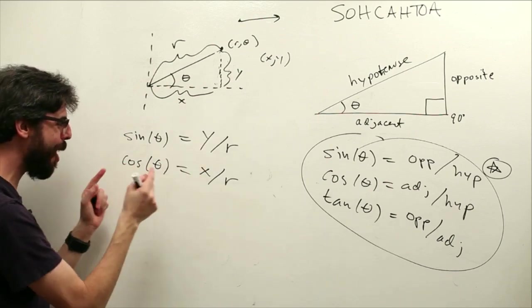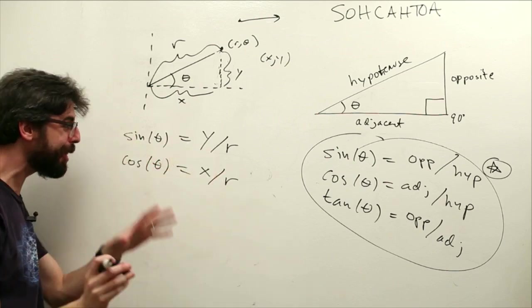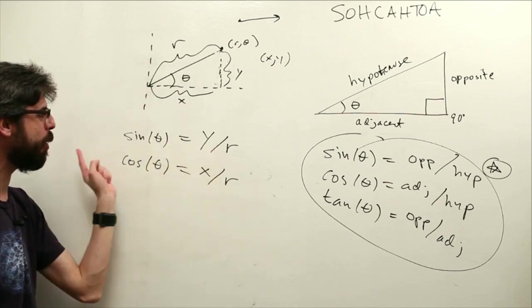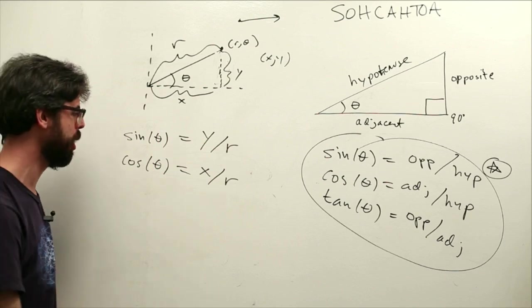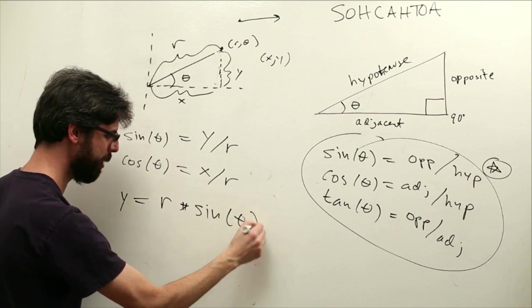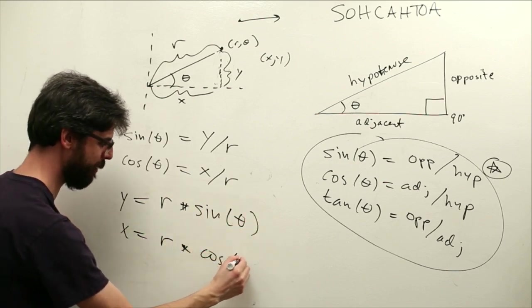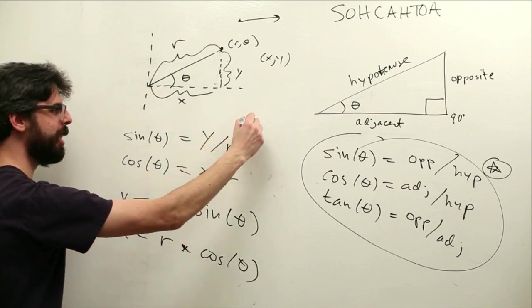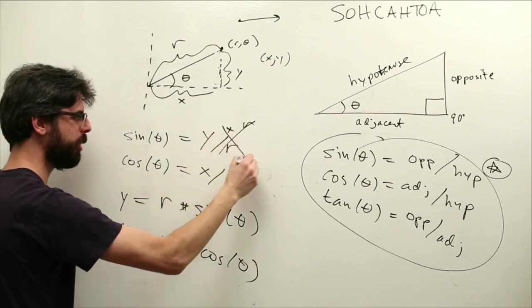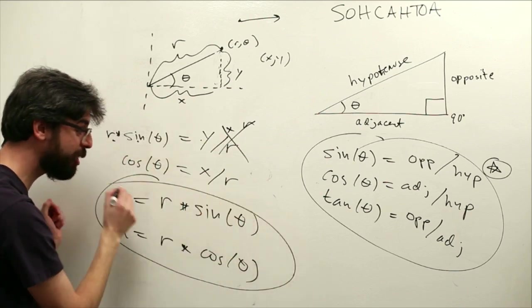We could solve for x or y so easily, right? I don't know if you like doing stuff with equations, but if you like doing stuff with equations, you can see here, just multiply each side of the equation by r. y is actually equal to r times sine of theta. x is equal to r times cosine of theta, right? If I multiply this side of the equation by r, the r's cancel each other out, and I have y equals r times sine theta.